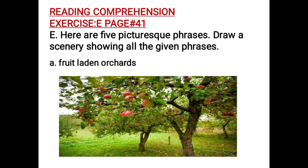You have to draw a scenery showing all the given phrases. These five phrases are picturesque, meaning when you read them, you can create a picture of the words in your mind. For example, the first phrase is 'a fruit laden orchard,' which means a garden that is full of fruits. When I say a garden which is full of fruits with so many fruits on the trees, all of you must be imagining a certain type of garden in your mind.